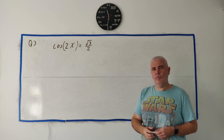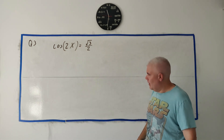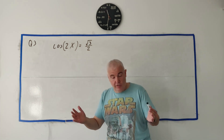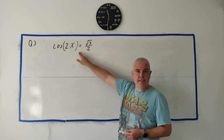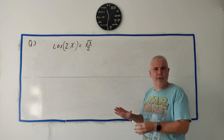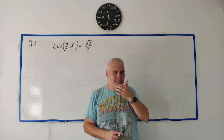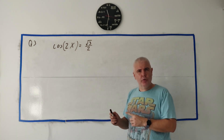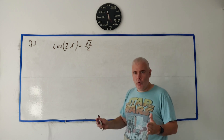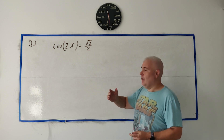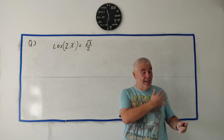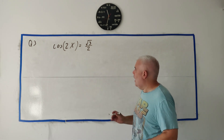Part B asks you to find all possible answers for x for this trigonometric function. This type of question is one where students commonly get some marks but not all, because it's quite easy to solve for just one answer. I'm going to do that first, and there are a couple of ways to teach this. I'll start with the slowest, most methodical way — it's a little longer, but I honestly think it's the best approach for students who have trouble.